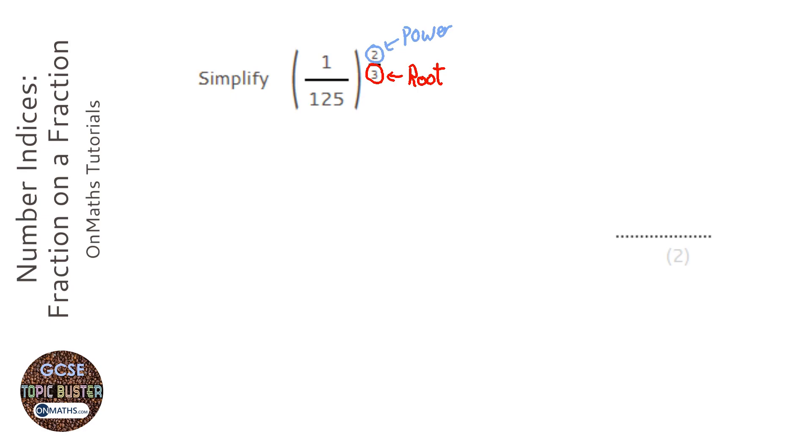So because it's a 3, it's going to be a cube root. If it was a 2, it would be a square root. So I'm going to cube root the top and bottom.